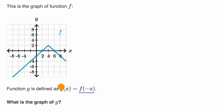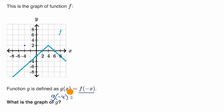Whatever the value of f is at a certain value, we would expect g to take on that value at the negative of that. So for example, we can see that f of four is equal to two. So we would expect g of negative four to be equal to two. g of negative four is going to be equal to f of the negative of negative four, which is equal to f of four.